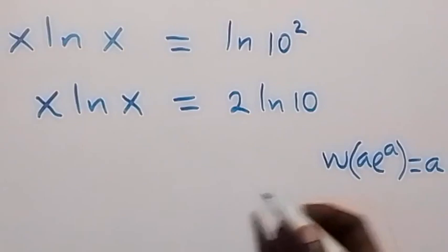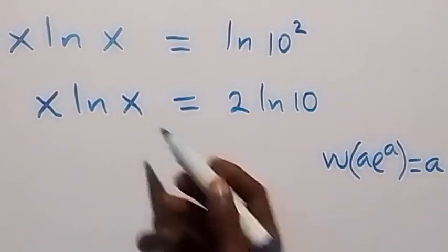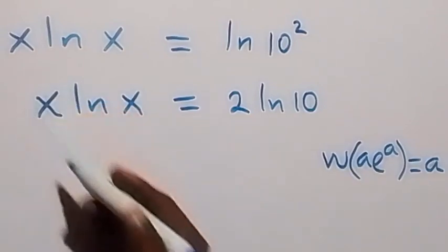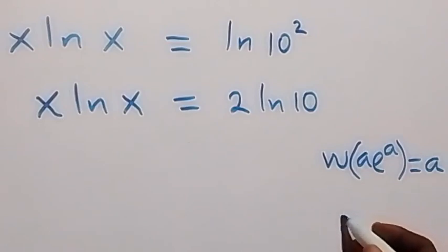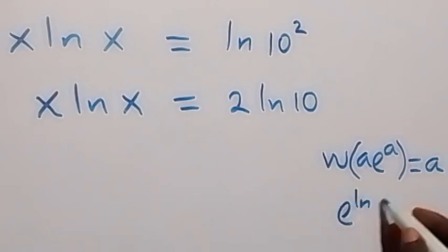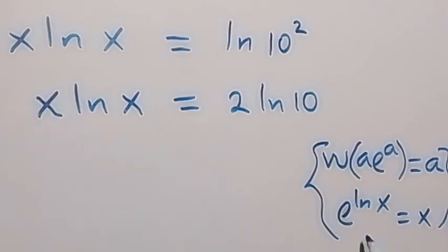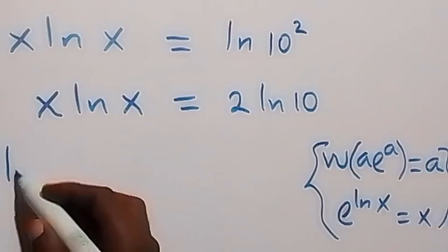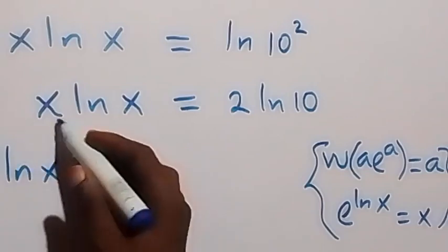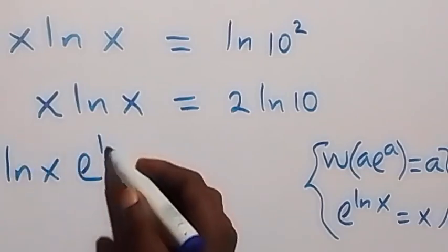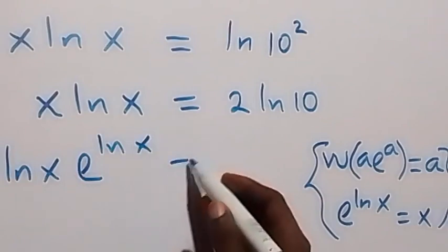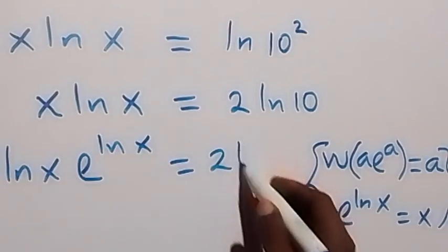Then also from here, we can rewrite x as e raised to the power ln x, which is the same thing as x. So instead of writing x here, we can write it as e^(ln x). This gives us ln x as the exponent, so e^(ln x) times ln x equals to 2·ln 10.